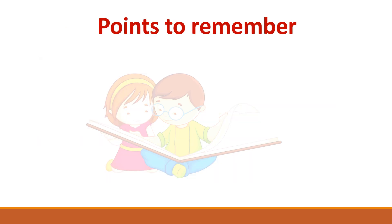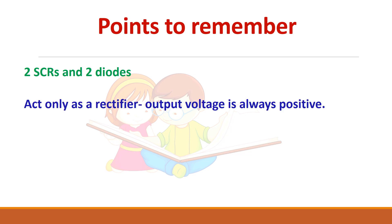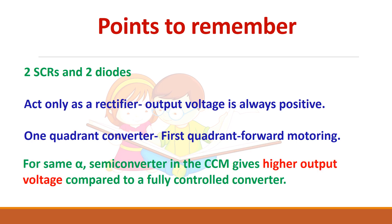So the points to remember here are. In semi converter we have 2 SCR and 2 diode. It can act only as a rectifier. The output voltage is always positive. And it is a one quadrant converter. It acts in first quadrant forward motoring mode. For same alpha actually semi converter will give you higher output compared to a fully controlled converter. That is why it is preferred in some applications. And it is economical compared to a fully controlled rectifier.